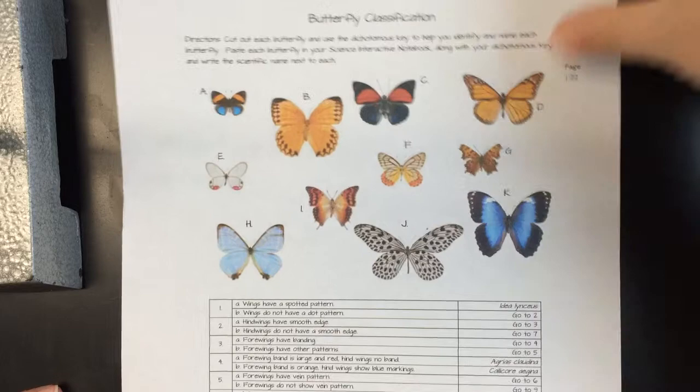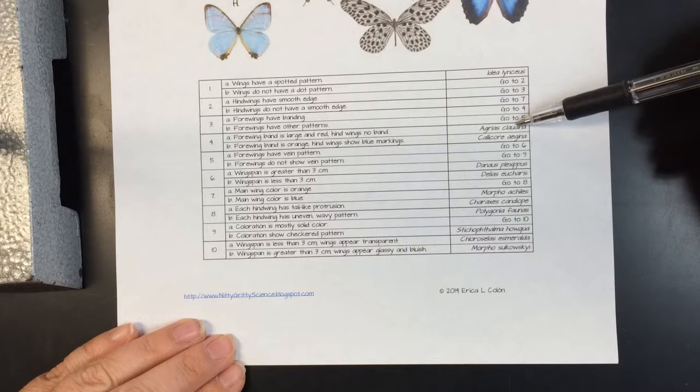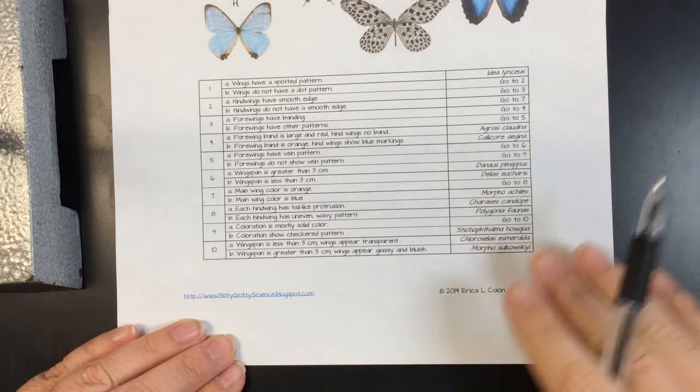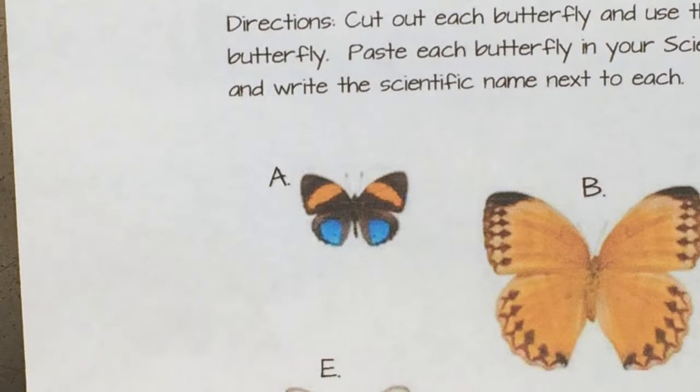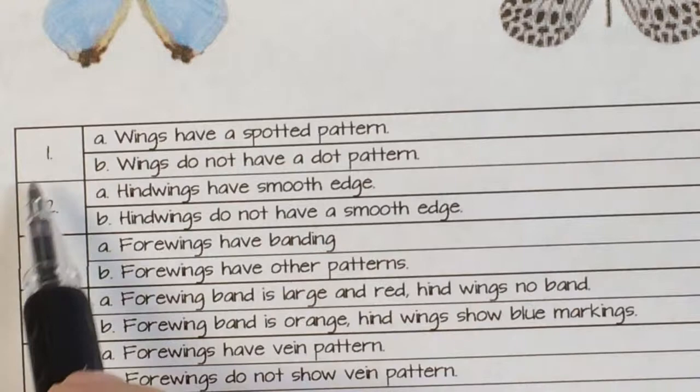What's nice is we've actually given you an answer key down here. And so if you look real closely, we have all the names — the genus species names — of all the different butterflies. So what you do here is you take a look at a butterfly. Let's start over here with adorable little butterfly A.